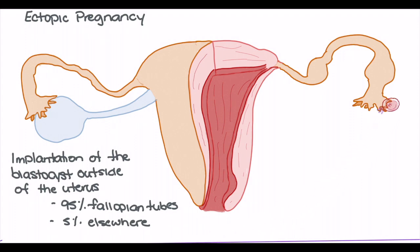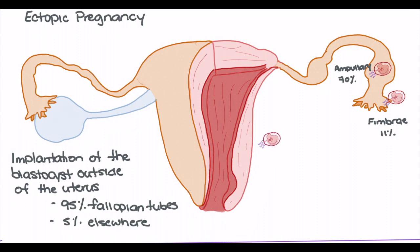Of these 95% fallopian tube pregnancies, we can break down where the blastocyst may implant. First, we may see implantation into the fimbrae, which makes up 11% of all ectopic pregnancies occurring in the fallopian tube. The most common site is ampullary implantation, accounting for 70%. Next, we can see implantation into the isthmus, making up about 12%. And finally, interstitial pregnancies make up around 2 to 3% of all ectopic pregnancies.